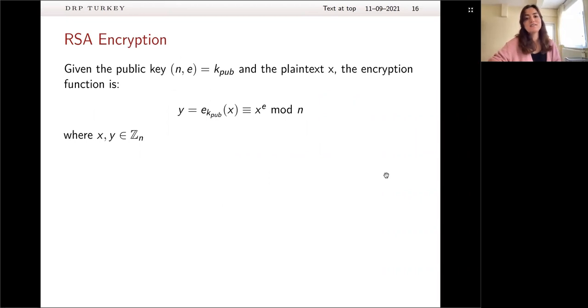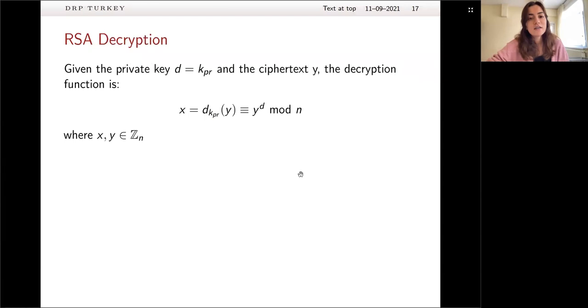So, for the encryption part, it's so easy. So, we are just taking the plaintext X, and X to the E must be equal to Y in modulus N. And it may seem really, really easy, but since we will be working with very large primes, it won't be that easy. The decryption part is just the same, but this time we are using private key D, and we are just writing Y to the D, where Y is the cipher text, and we will get X, our plaintext, back.